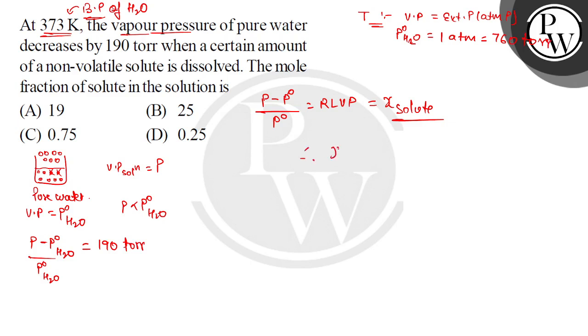Therefore, mole fraction of solute would be equal to lowering of vapor pressure, which is 190 torr, upon atmospheric pressure, which is 760 torr. This is equal to 0.25.